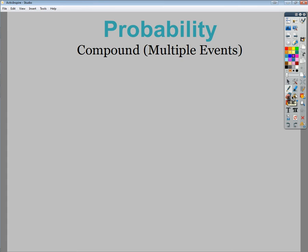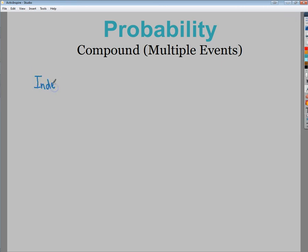Anytime you have multiple events and you're dealing with probability, there's two basic flavors of this type of probability. There's events that are considered to be independent, and then there's events that are considered to be dependent.